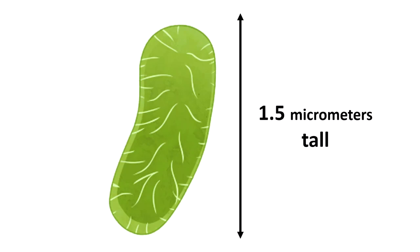If we measure bacteria cells, we find they have some different sizes, but on average they're about 1.5 micrometers tall. A micrometer is a millionth of a meter — a thousandth of a millimeter.